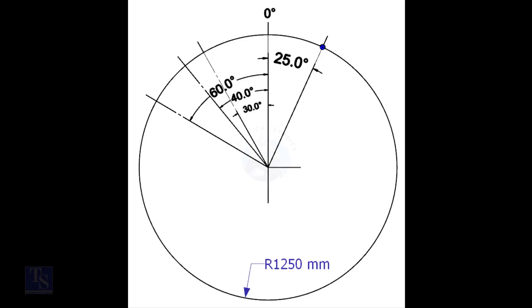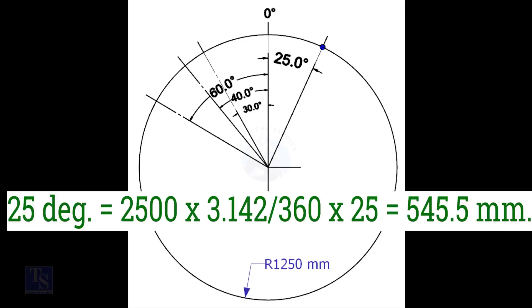We have the included degree and the diameter of the tank. Let us calculate the arc length. Arc length for 25 degrees is equal to outer diameter times 3.142 divided by 360 times 25, which equals 545.5 millimeters.